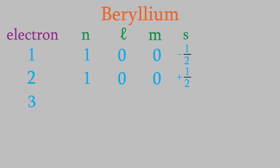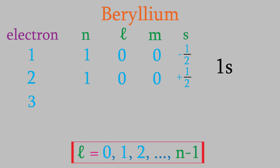For the third electron, we again want the lowest energy possible, so it should have the lowest possible value of n. However, it can't have n equal to 1, because there is only one orbital with n equals 1 and that orbital is already full. The only possible orbital for n equals 1 is the one with l equals zero, and that's the one we've already used. This means the third electron must have n equals 2. For l, the value must be between zero and n minus 1, so since n is 2, l must be either zero or one. The electron wants the lowest possible energy, so l will be zero — meaning this electron is in a 2s orbital, and m must also be zero.